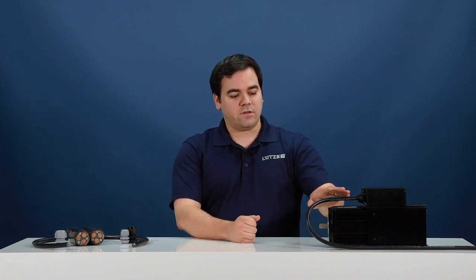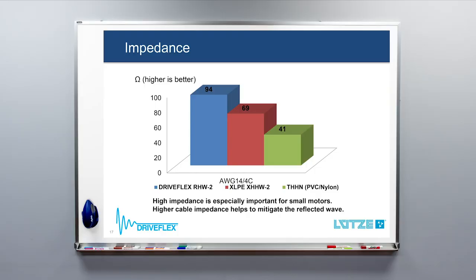How do we make the cable impedance higher? There are two factors that go into the impedance value for drive cable. The first is the insulation material used, and the second is the relationship of the conductors to one another — the actual geometry of the cable. Lucid DriveFlex uses an XLPE thermoset type insulation. In testing, we've shown that XLPE can have an impedance value as high as two times that of PVC nylon insulated cable. This significantly reduces the difference between the cable impedance and the motor impedance and helps minimize the reflected wave.